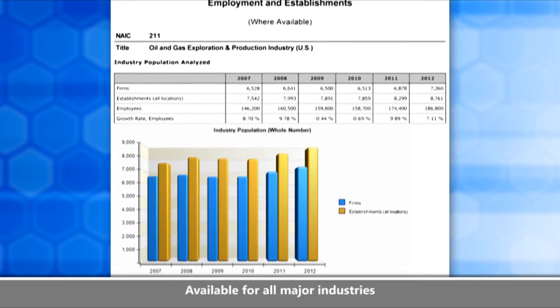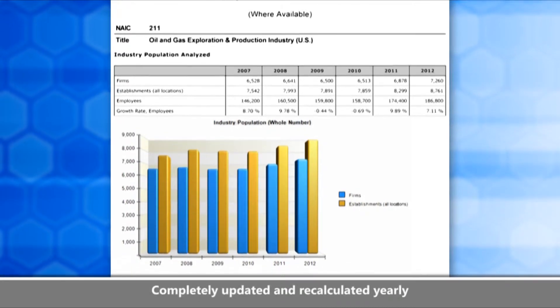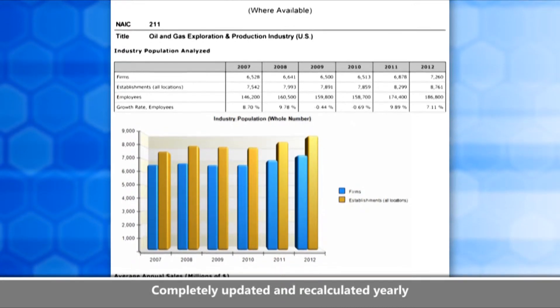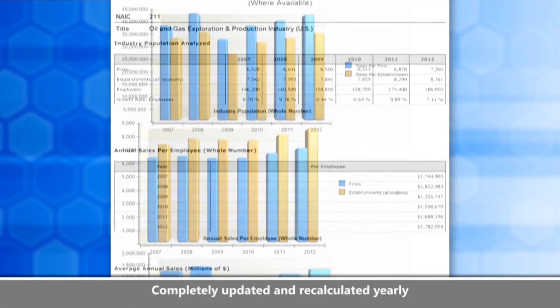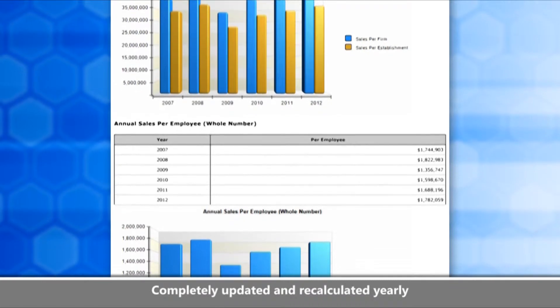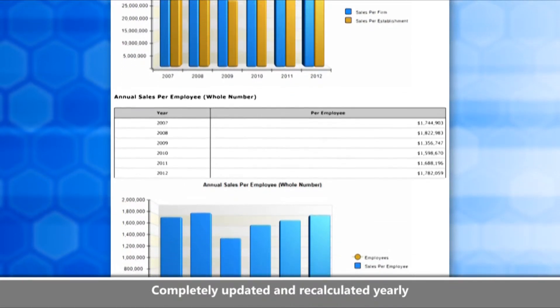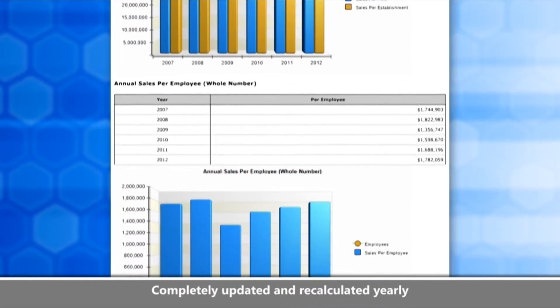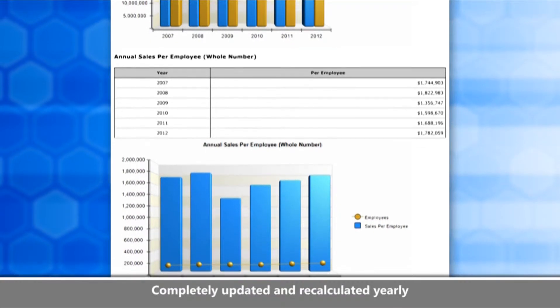The introductory pages include things like employee count, number of firms involved in the industry, how many locations those firms have, growth rate in employment, and sales per employee — all really vital information.